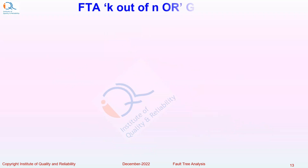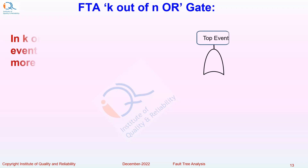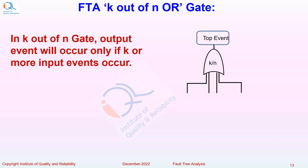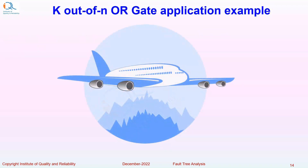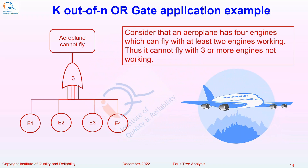Let us see a special fault tree analysis gate: the k out of n OR gate, also called the Voting OR gate. In a k out of n gate, the output event occurs only if k or more input events occur. For example, an aeroplane has 4 engines and can fly with at least 2 engines working — it cannot fly if 3 or more engines fail. The fault tree shows 'aeroplane cannot fly' as the top event with a Voting OR gate of 3 out of 4, with engines E1, E2, E3, E4 as inputs.